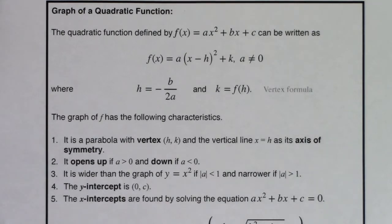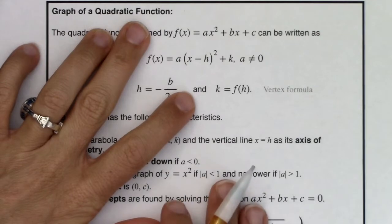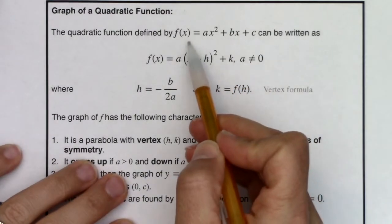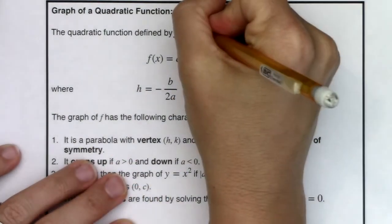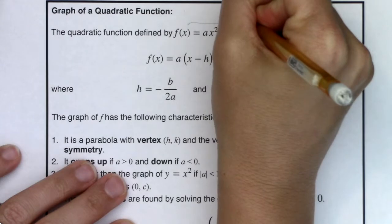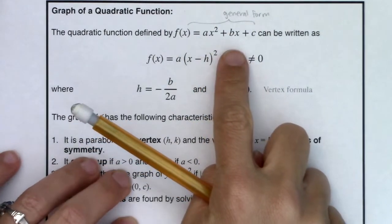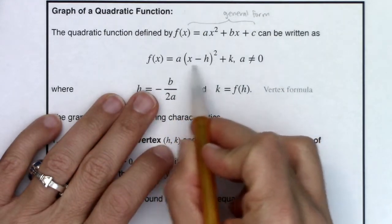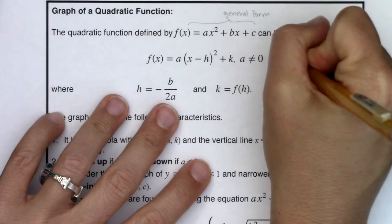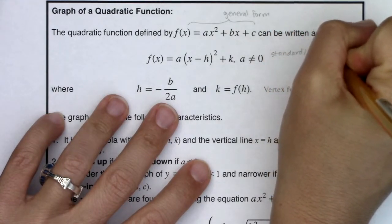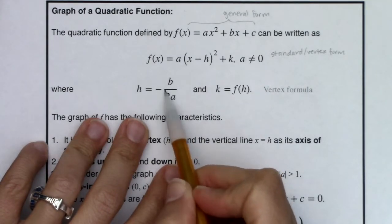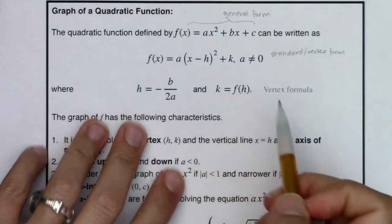To summarize what we've learned about graphs of quadratic functions — they have the vocabulary term parabolas. Sometimes quadratic functions will be in general form: ax squared plus bx plus c, which is great for using the quadratic formula. Sometimes they'll be in standard form, also called vertex form. You can find the vertex using negative b over 2a for the x-coordinate, then plug that in to get the y-coordinate.